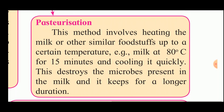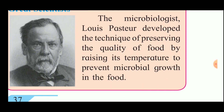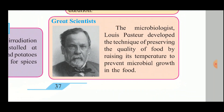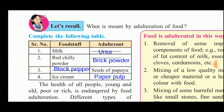The next method is pasteurization. This involves heating milk or other similar foodstuffs up to a certain temperature — for example, milk is heated at 80 degrees Celsius for 15 minutes and then cooled quickly. This destroys the microbes present in the milk. The milk packets distributed in the early morning are pasteurized milk. Microbiologist Louis Pasteur developed this technique of preserving food quality by raising its temperature to prevent microbial growth.